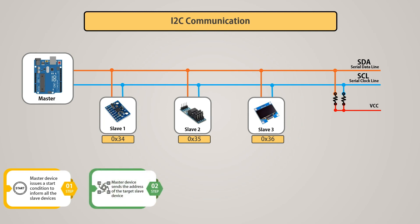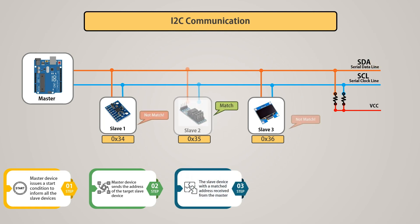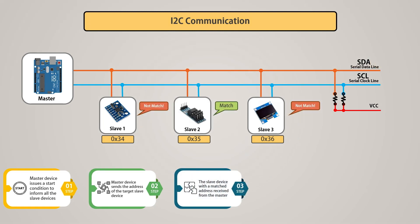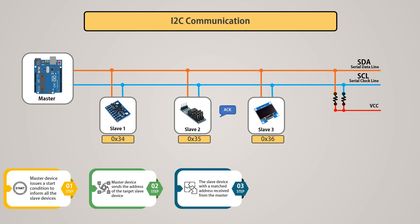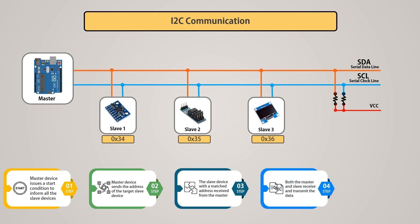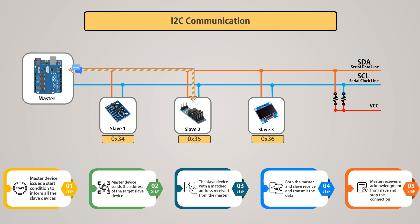Next, the master device sends the address of the target slave device, which is compared with all connected slave devices' addresses. If an address matches, that device is selected and the remaining devices are disconnected. The matched slave responds with an acknowledgement to the master, and communication is established on the data bus. Both the master and slave then receive and transmit data depending on whether the communication is read or write. The master can transmit 8 bits of data to the receiver, which replies with a 1-bit acknowledgement.